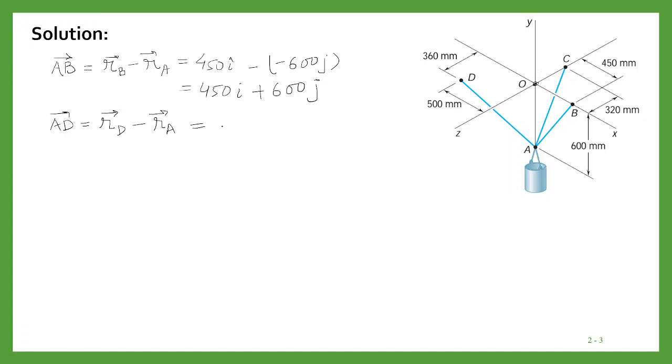For D, we have x as 500i, then y is 360, and z is 360.